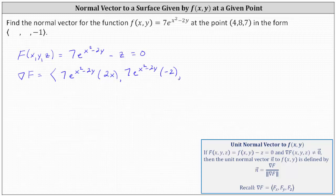Finally, the z component equals the partial of big F with respect to z. Differentiating with respect to z and treating x and y as constants: the derivative of 7e^(x²-2y) with respect to z is 0, and then minus the derivative of z with respect to z gives us negative 1.